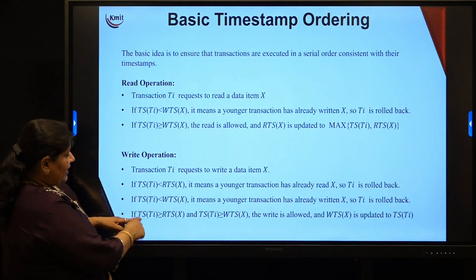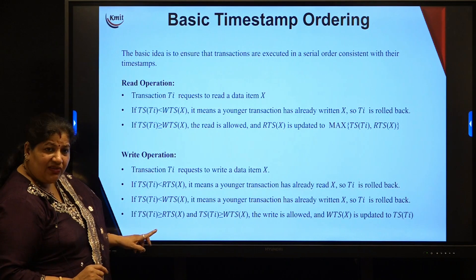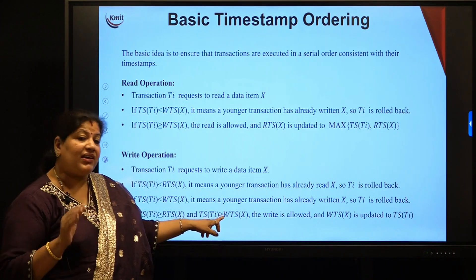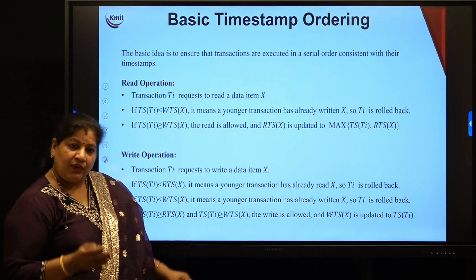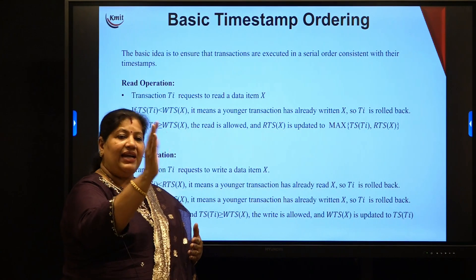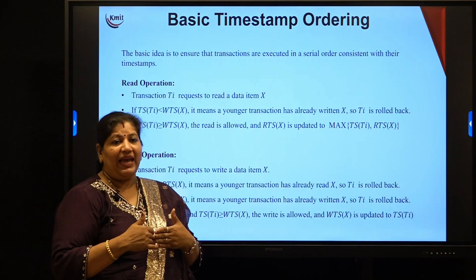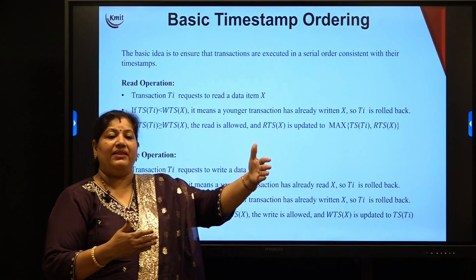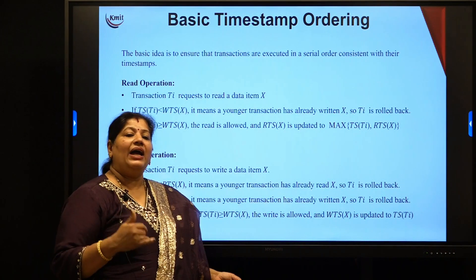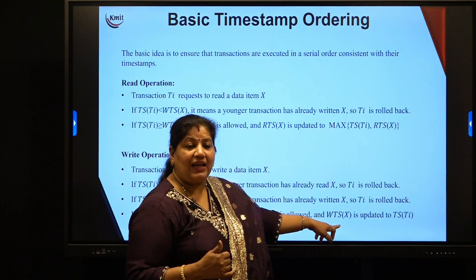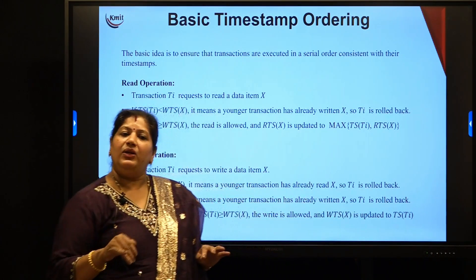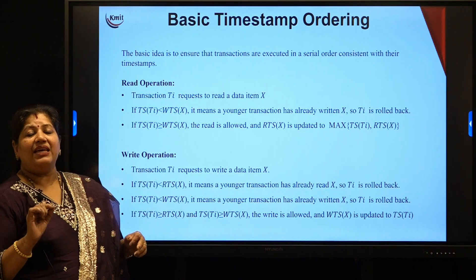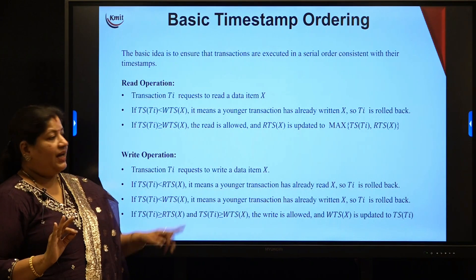Whereas if the timestamp of Ti is greater than both the read timestamp and write timestamp on x — meaning an older transaction has read or an older transaction has updated — then Ti can be allowed. Because you are going in sequential order and Ti is a newer transaction with a higher timestamp. So the write is allowed, and you update WTS(x) to TS(Ti), so that Ti is recorded as the transaction with the highest timestamp that has last updated x.